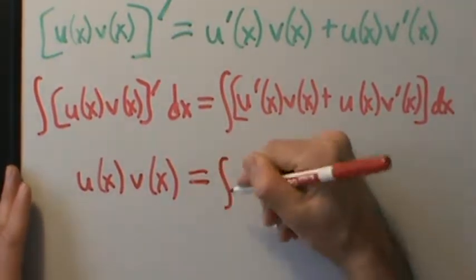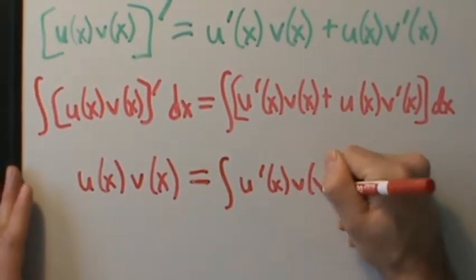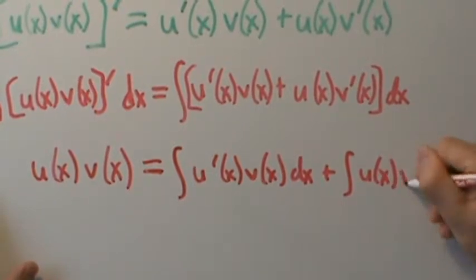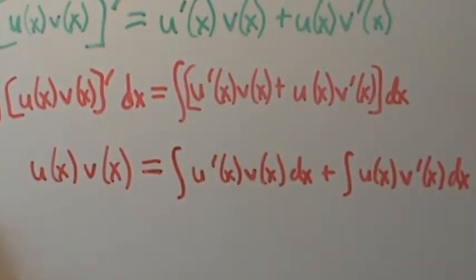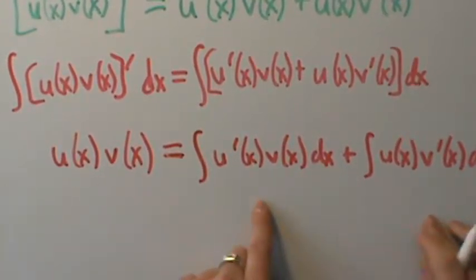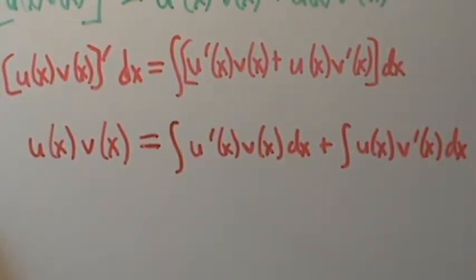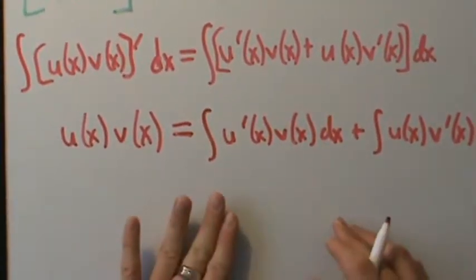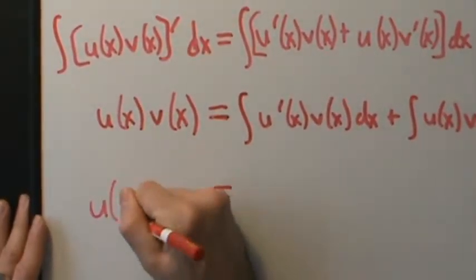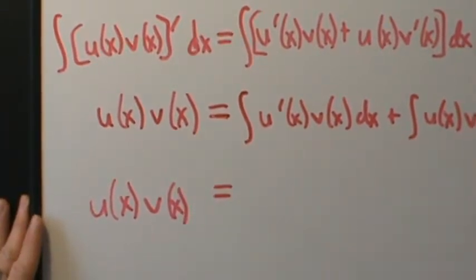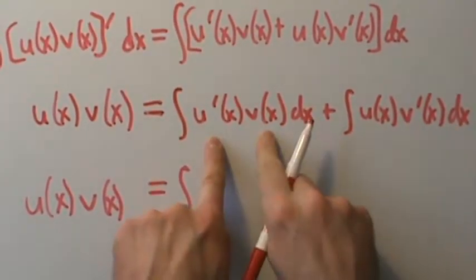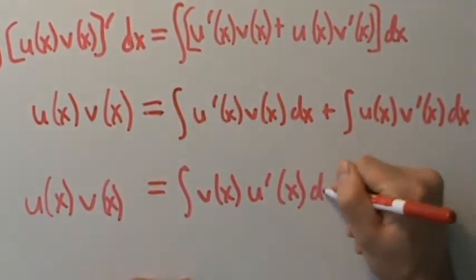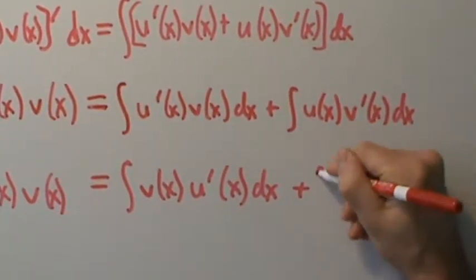So this is going to be the integral of u prime of x times v of x dx, plus the integral of u of x times v prime of x dx. We didn't write a plus c because these two integrals both have plus c's anyway. Now what we want to do is use differential notation. So I'm going to rewrite this — u of x times v of x — and switch these two around, since we're just multiplying two things together.